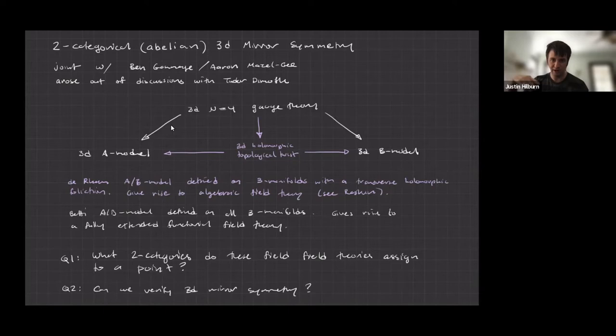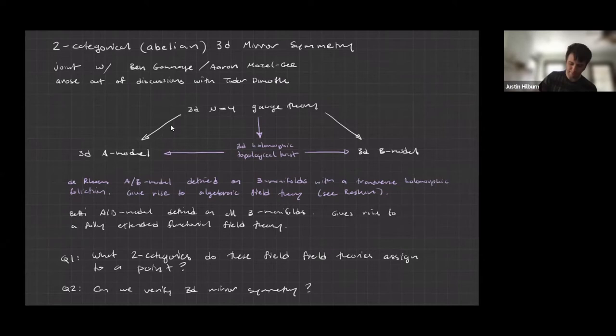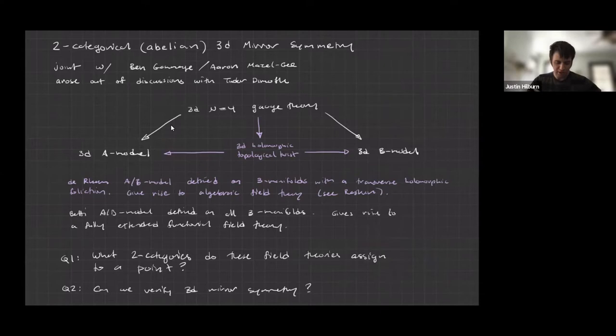These full 3D twists give rise to fully extended functorial field theories. We lose our connection to algebraic geometry on one side, but we can go deeper categorically and ask what two-categories these field theories assign to a point. Then we'll try to verify 3D mirror symmetry, and in both cases I'll be able to give an answer in the abelian setting.